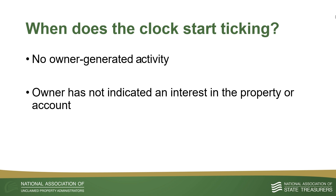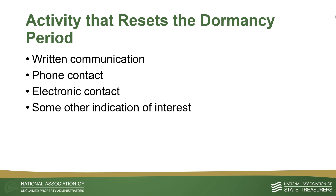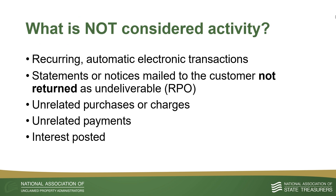There are certain activities that may reset the dormancy period and remove a property's dormant or unclaimed status. Communication with the apparent owner of an account or property, electronic financial transactions performed on the account by the apparent owner, or a contemporaneous documented communication with the apparent owner may reset the dormancy period. Not all communications are considered owner activity, including delivered mail, interest posted, or recurring automated transactions.